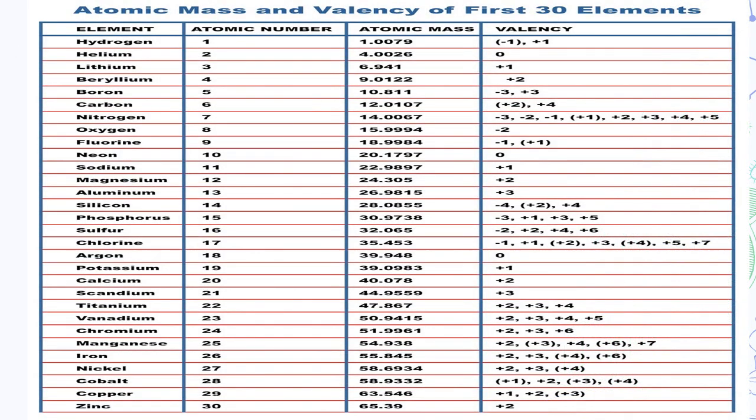Now let us see the valency of first 30 elements of the periodic table, which can be easily memorized by the following trick. You can observe that the elements have plus 1, minus 1, plus 2, minus 2, plus 3, minus 3, plus 4, minus 4, plus 5, plus 7, various valencies. These valencies are nothing but the number of electrons which the element tends to either give or take to attend an octet configuration.